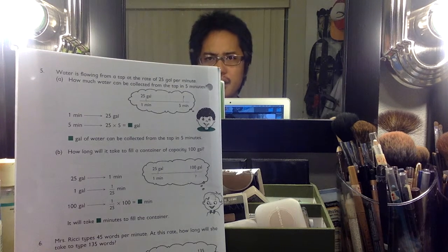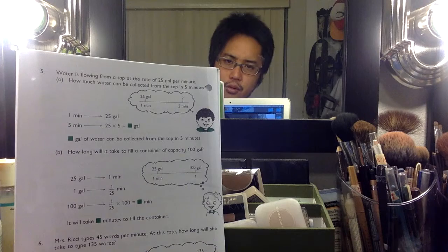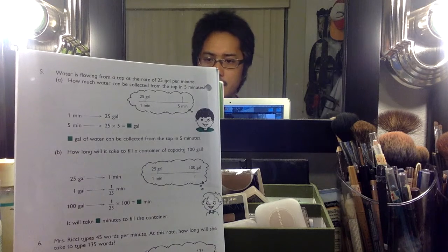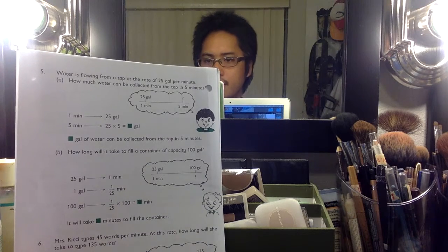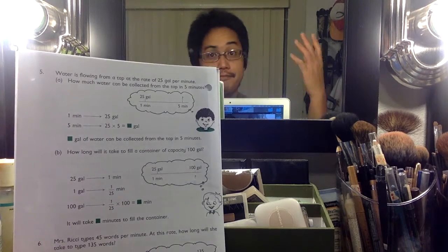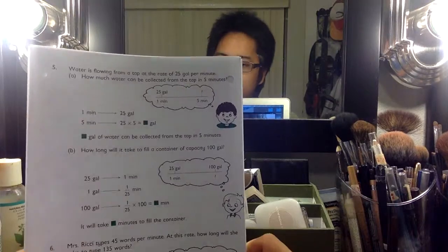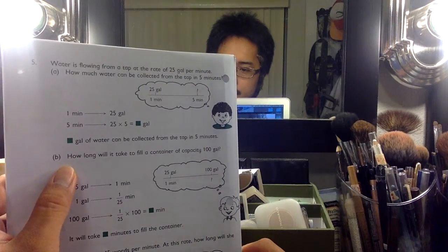be 25 times 5. 25 times 4 is a hundred, and then 25 times 5 is like five quarters, which is a dollar 25, or 125. There we go. Let's see, how long will it take to fill a